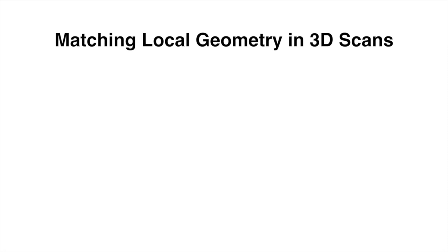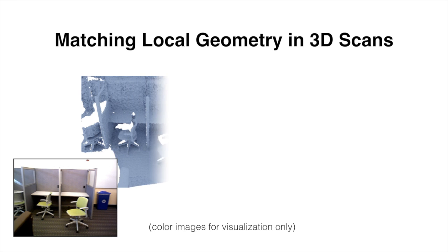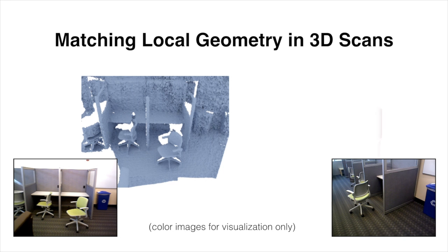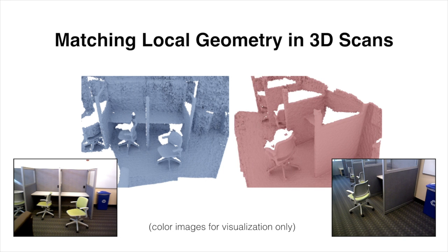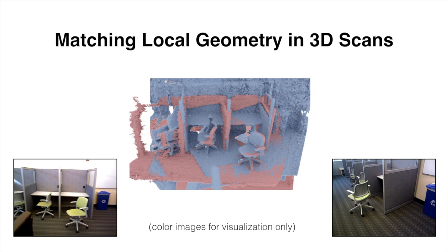In this paper, we focus on matching local geometry and 3D scanning data. For example, given a depth scan of a scene and a second scan captured from a different viewpoint, the goal is to match local 3D geometric features between the scanned surfaces to establish correspondences, which can then be used to bring the surfaces into alignment.